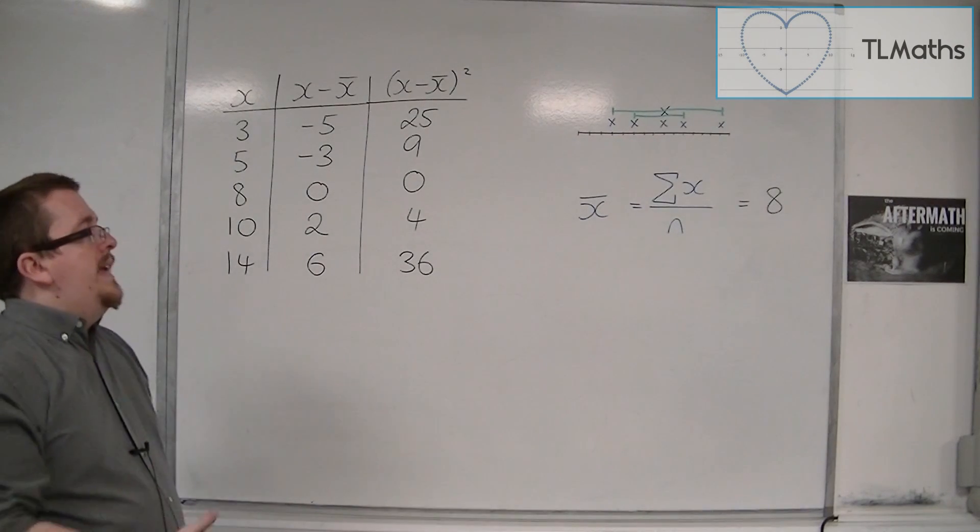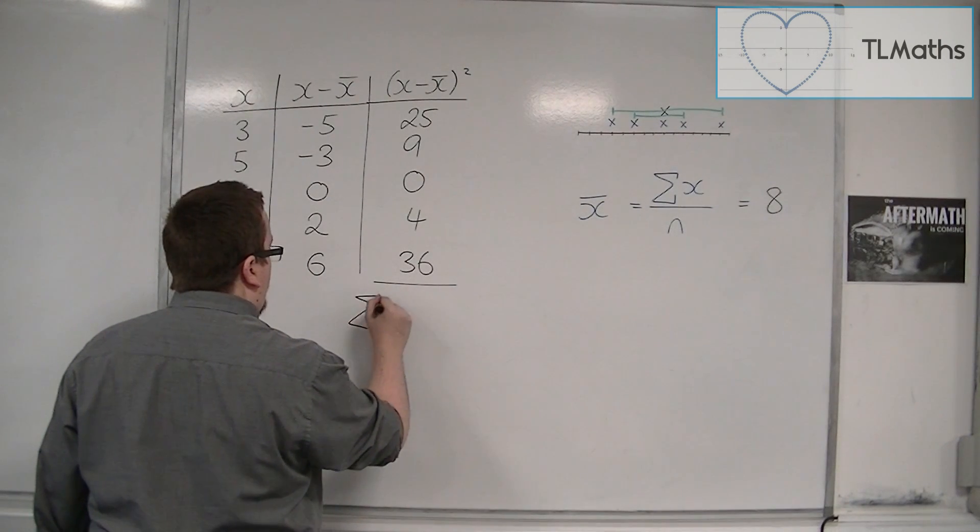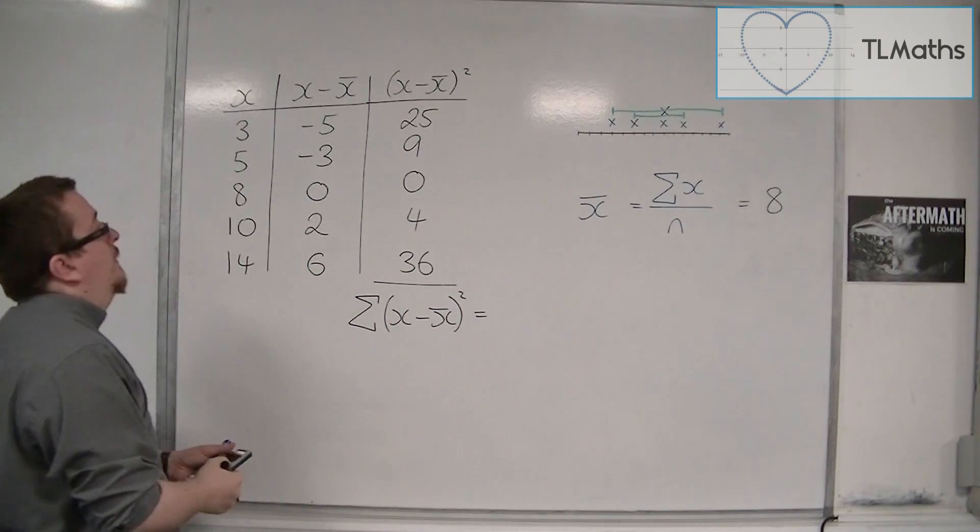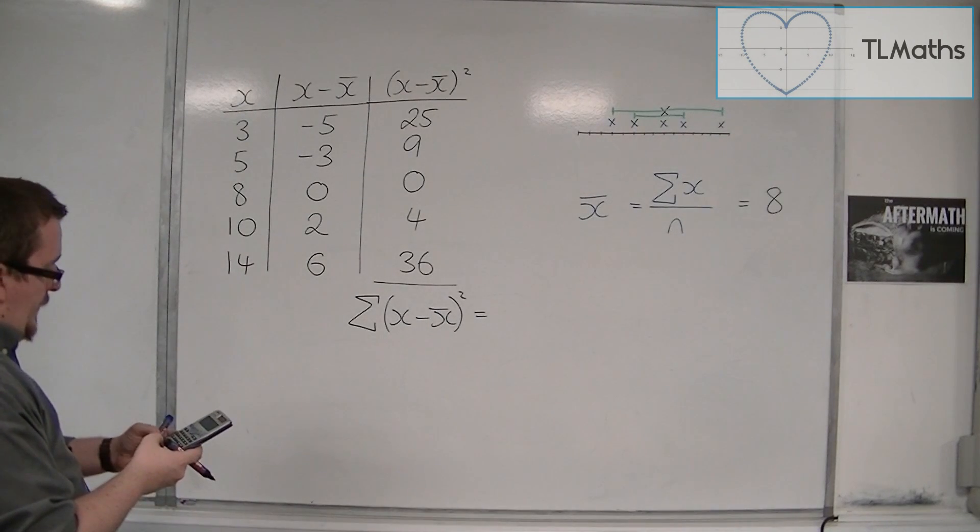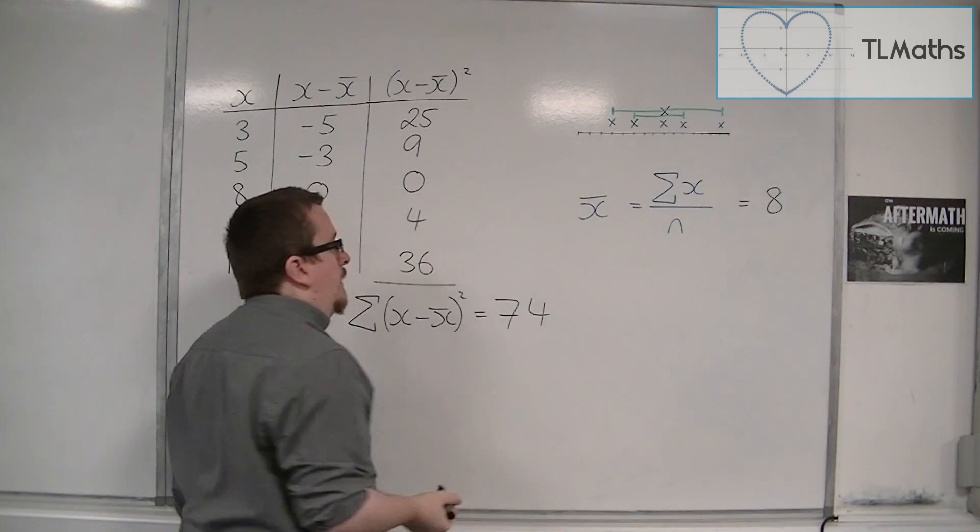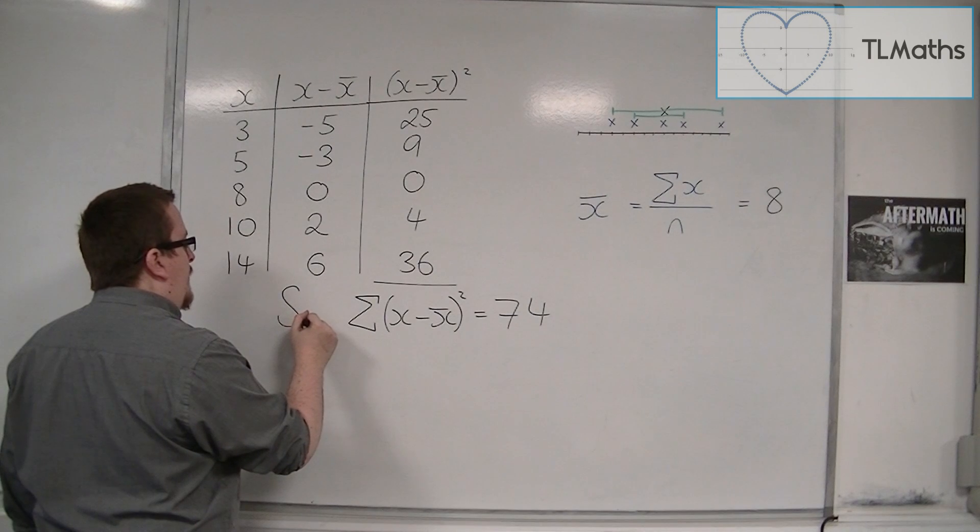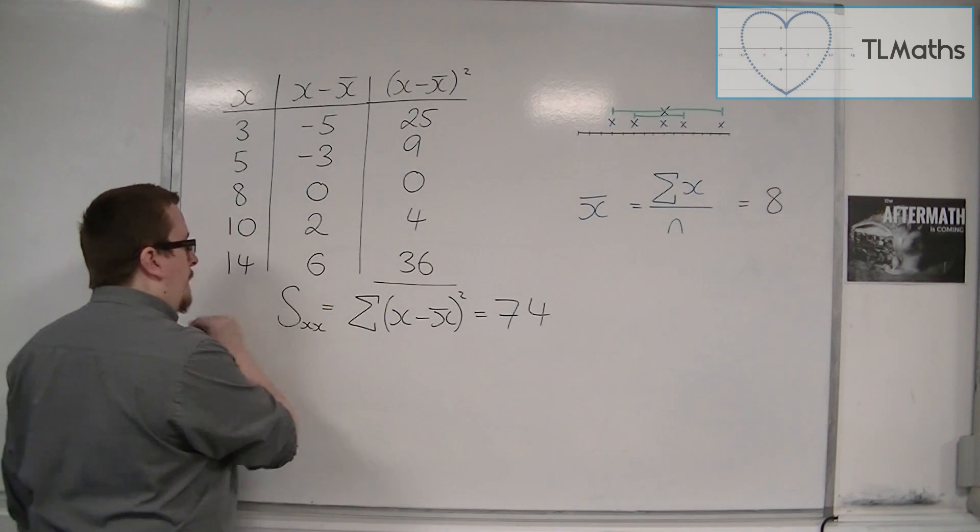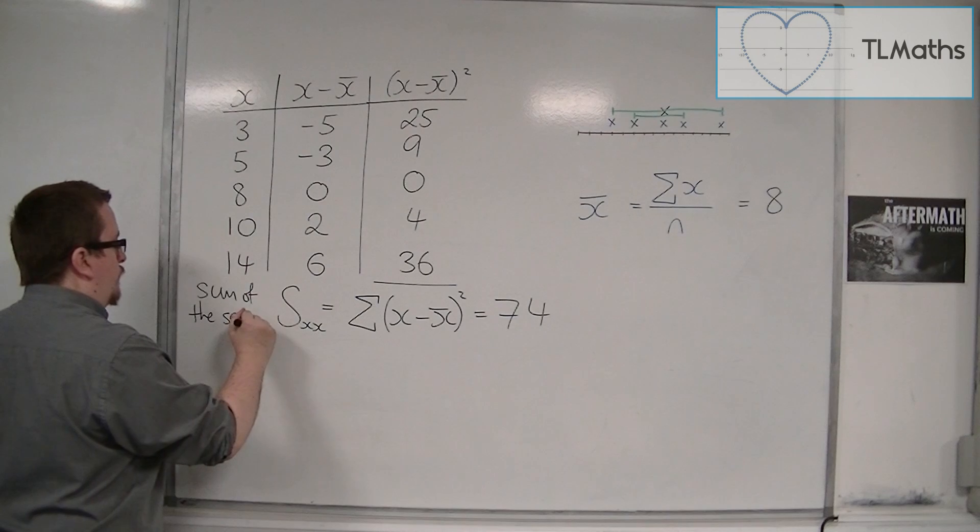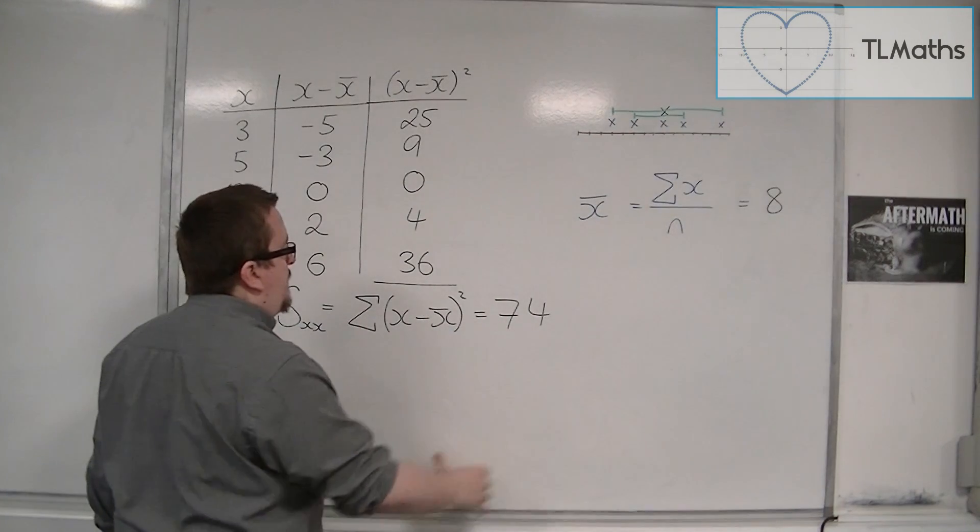So now, if I add them together, then this will be the sum of the x minus x̄ squared. So I have 25 plus 9 plus 4 plus 36, and that's 74. And this is what I refer to as the sum of the x squareds, or the sum of the squares. This is the sum of the squares, Sxx, and that's equal to 74 in this case.